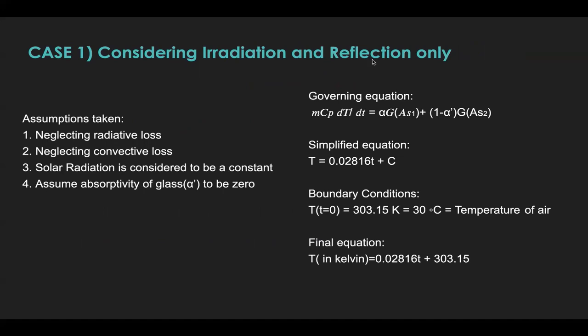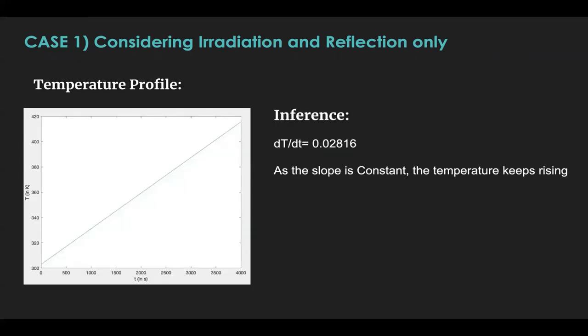The left-hand side, mCp dT/dt, is the rate of energy change within the control volume. And the right-hand side are the incoming energy terms. On solving this, analytically, we obtain that the temperature has a linear profile. The boundary conditions are that the temperature initially is nothing but the temperature of air outside, which is 30 degrees Celsius. On plotting this, we obviously see that it's linear with a slope 0.02816.